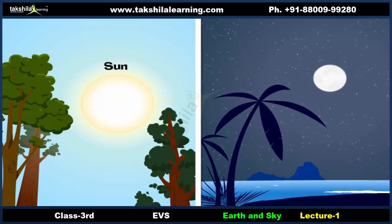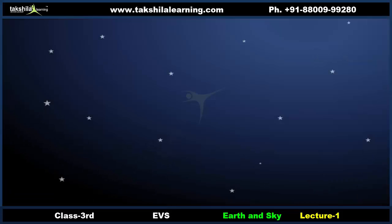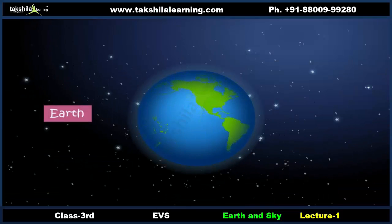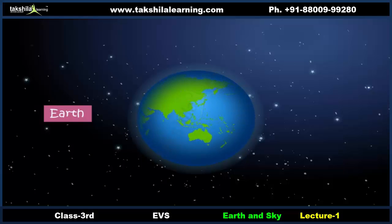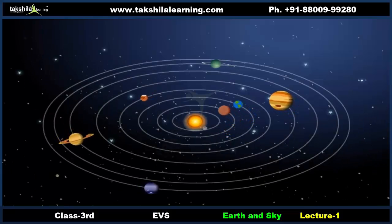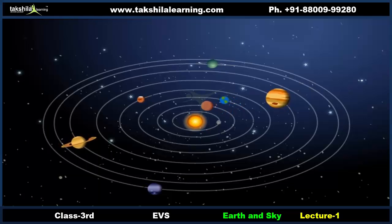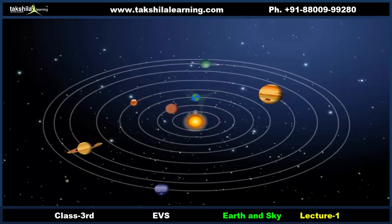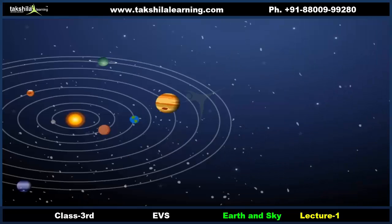The Sun, Moon and the stars that we see in the sky are all located in space. The Earth on which we live is also in space. Everything from the small dust particle to the large planet is placed in space.